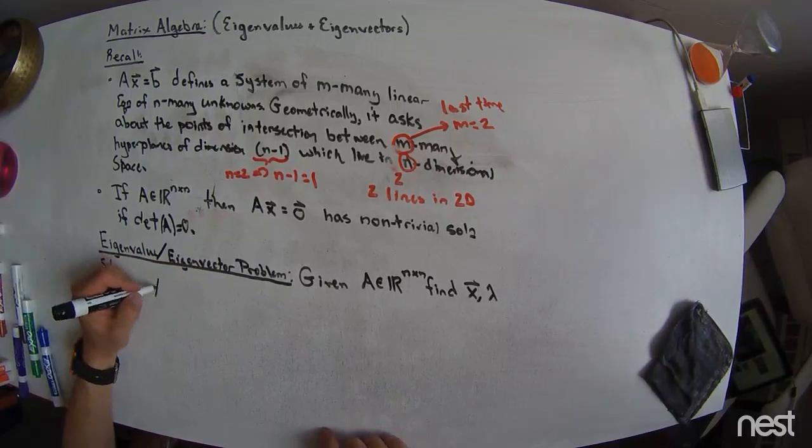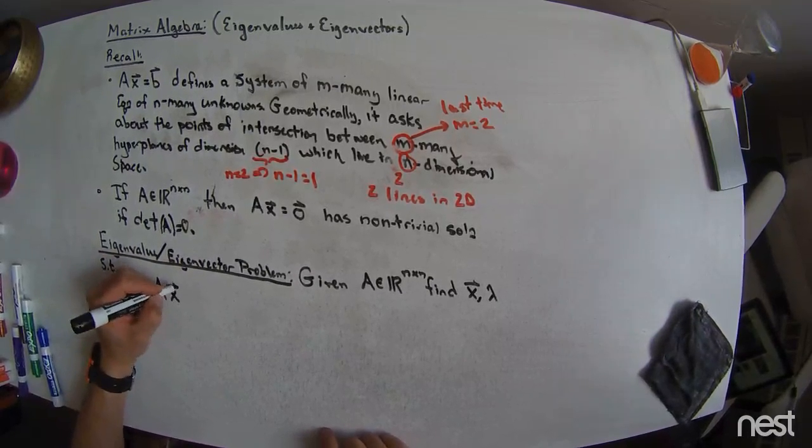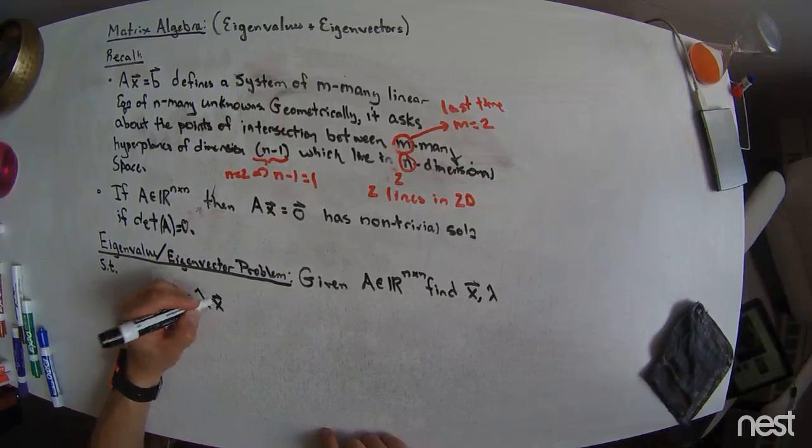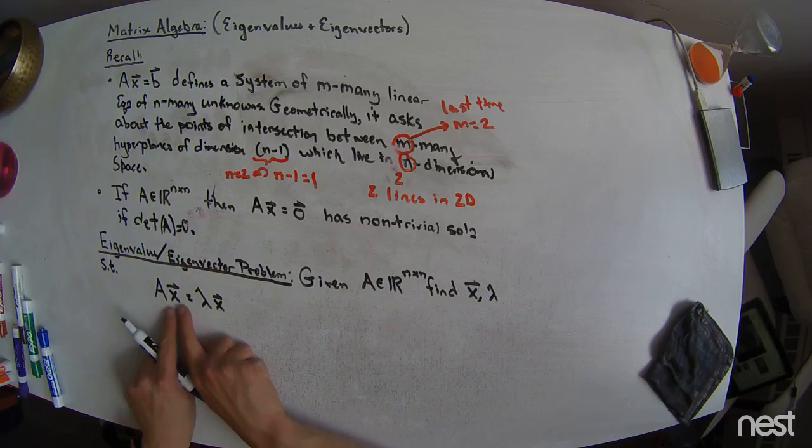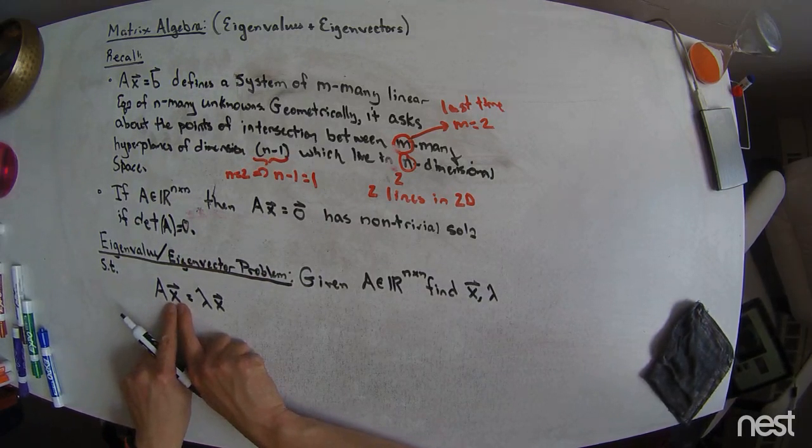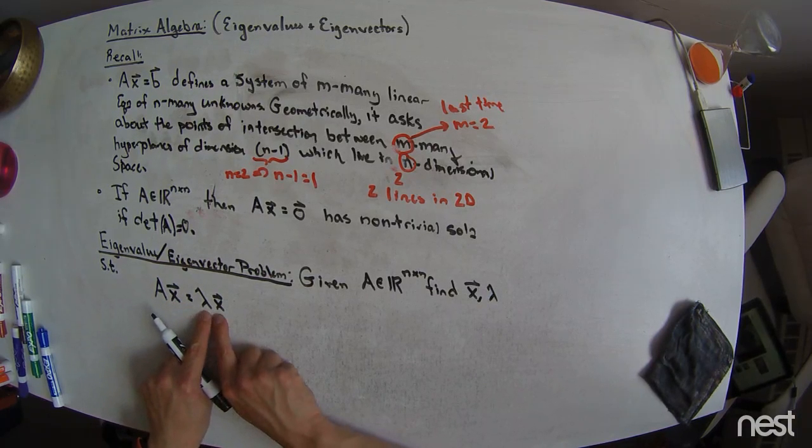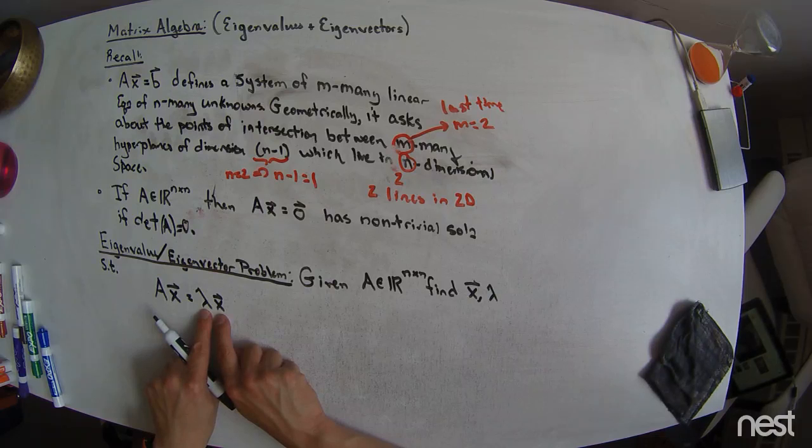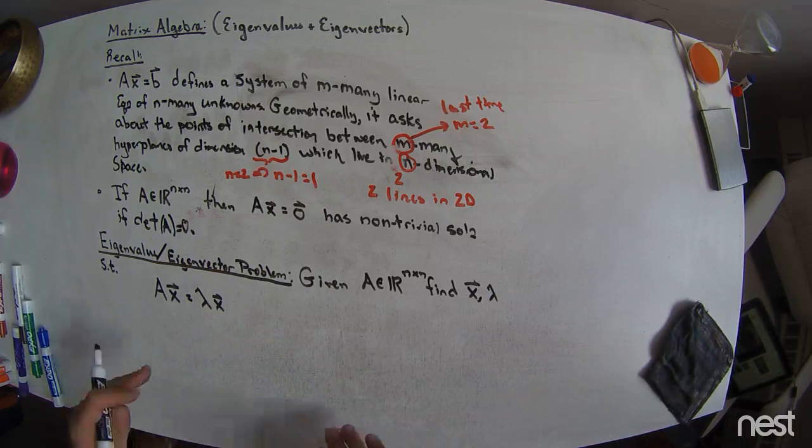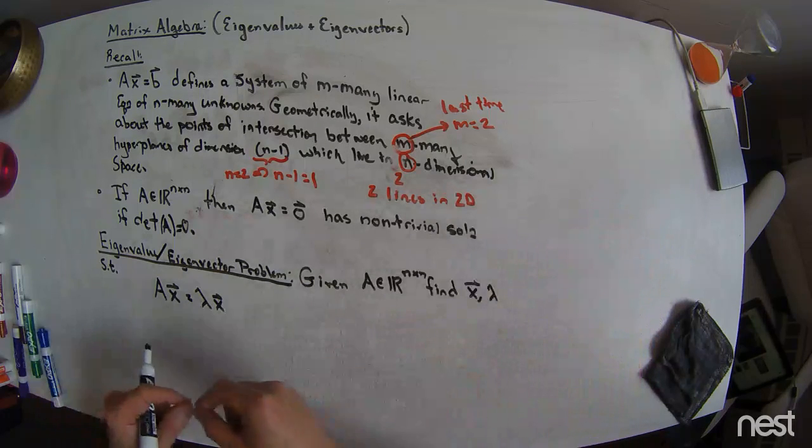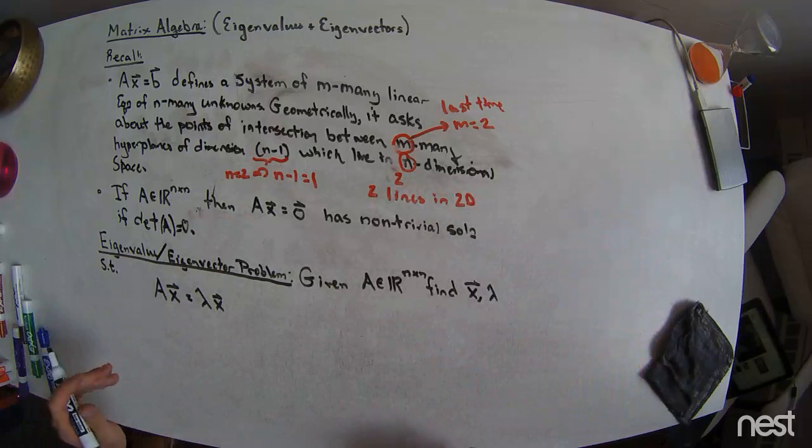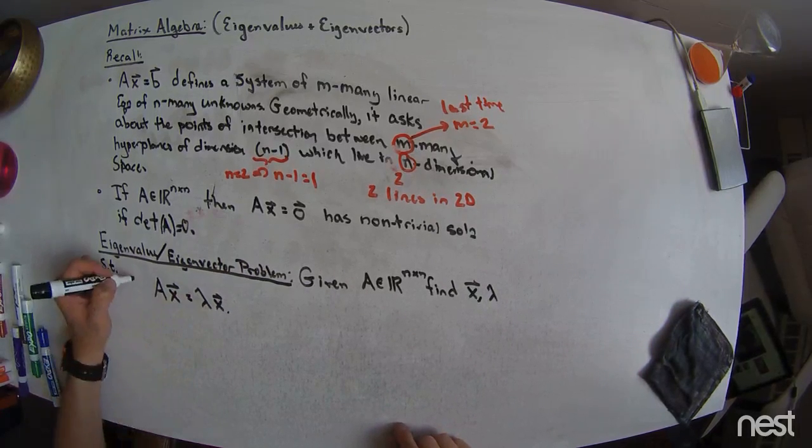Such that A times X is equal to lambda times X. That is the fundamental eigenvalue, eigenvector problem. From what I understand, eigen is a German word that means characteristic or special. And so, what we're looking for are special vectors so that the A matrix multiplies the X vector. And all that action does is to scale the X vector by an amount lambda. So, it's not constructing a new direction in space. It's keeping the same direction from before, but just elongating it or maybe compressing it.